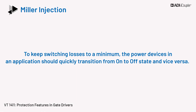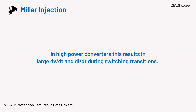To keep switching losses to a minimum, the power devices in an application should quickly transition from the on to the off state and vice versa. In high power converters, this results in large DV/DT and DI/DT during switching transitions.